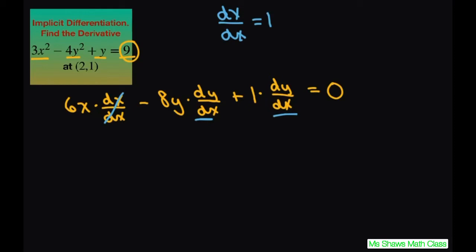Let's just plug in our 2 and 1. So x is 2. It's going to be 6 times 2 minus 8 times 1, and then we put derivative of y with respect to x plus derivative of y with respect to x equals 0.